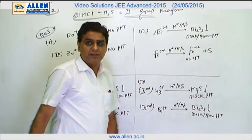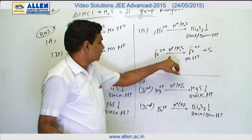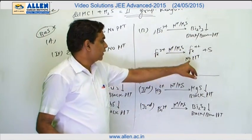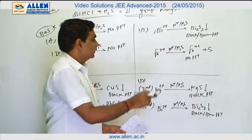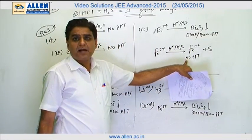Fe³⁺ when reacting with acidic medium in the presence of H2S produces Fe²⁺ and sulfur turbidity. In this reaction Fe³⁺ is converted to Fe²⁺ but no precipitate is formed by the iron.